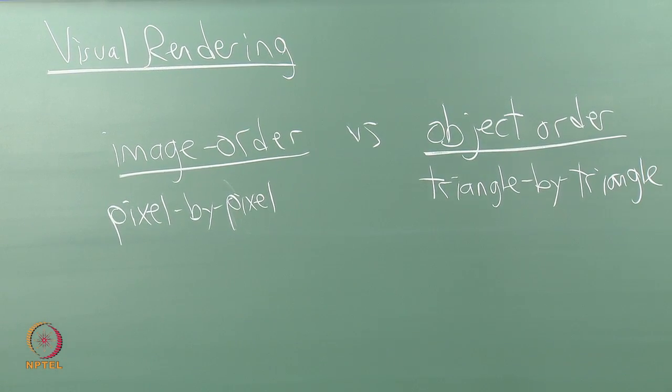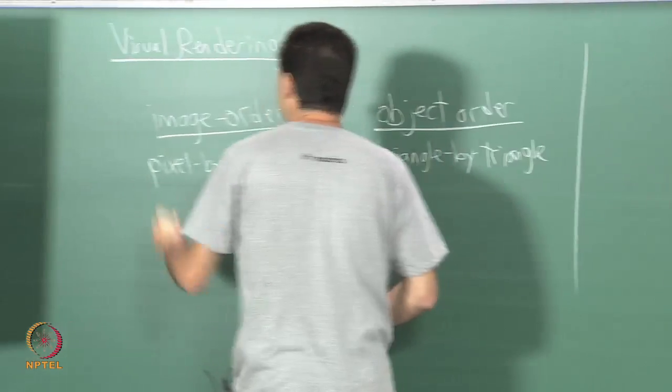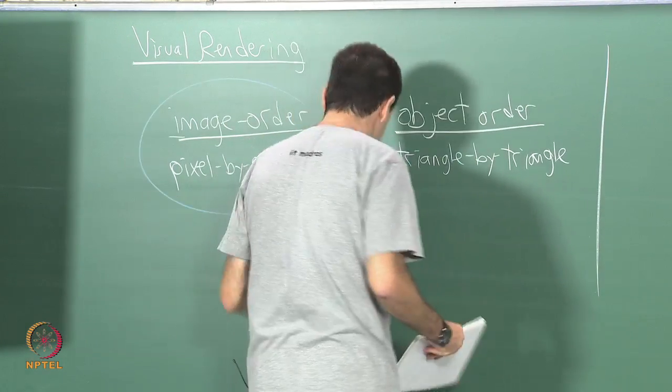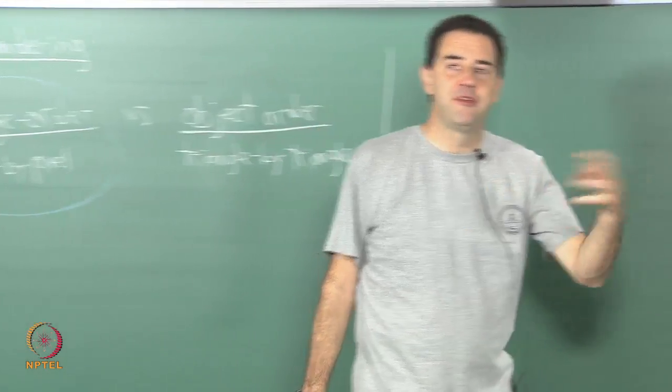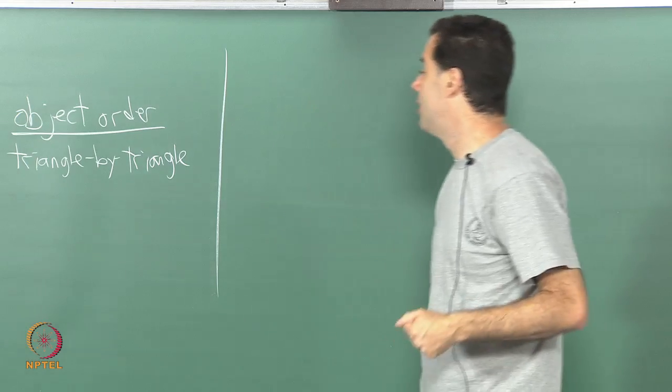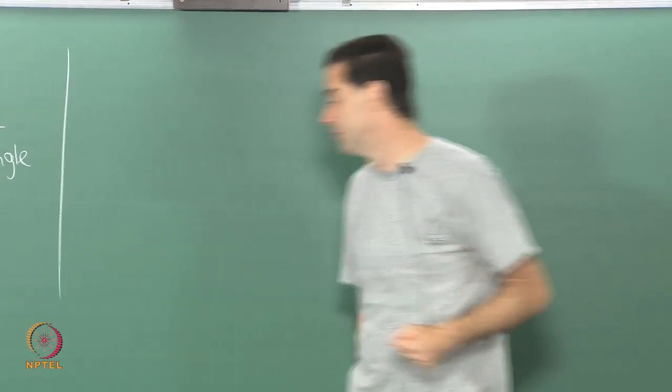Let me just go through what happens in image order rendering first. So I will cover this case, but the particular methods inside are related to both. So some of the things I will cover end up applying as well to object order rendering. So we will come back to those.